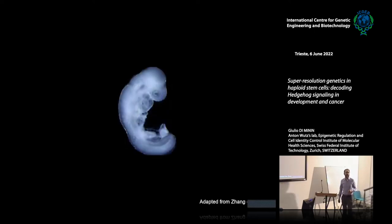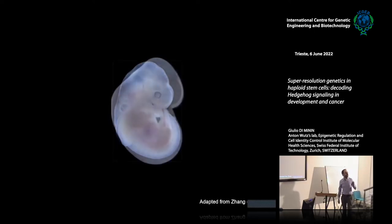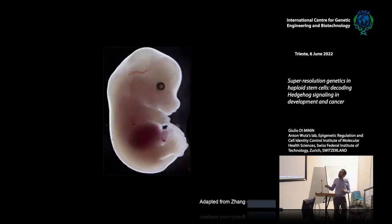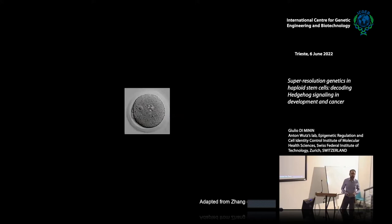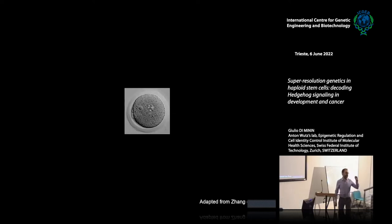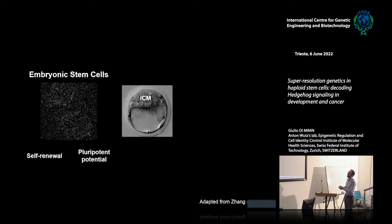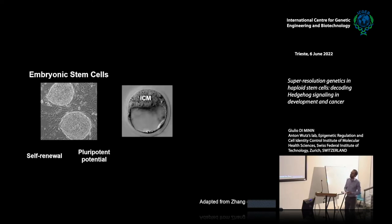That is: how, from one single cell, we have the formation of an entire organism. If we rewind this developmental movie, everything starts with a fertilized oocyte, which we can also call a zygote. The zygote starts to rapidly divide and leads to the formation of a blastocyst. From the blastocyst, and more specifically from the inner cell mass, we can derive our embryonic stem cells.